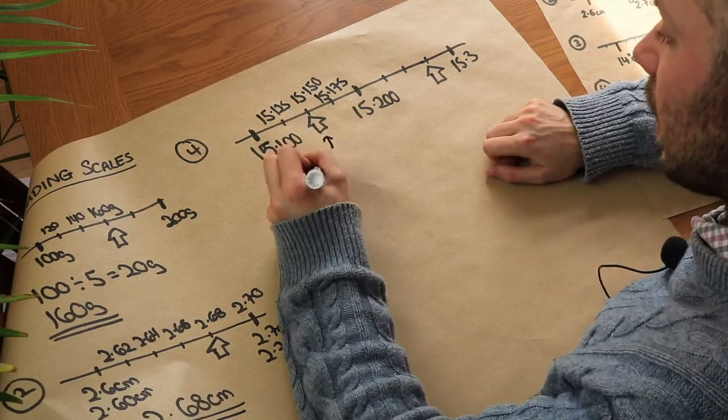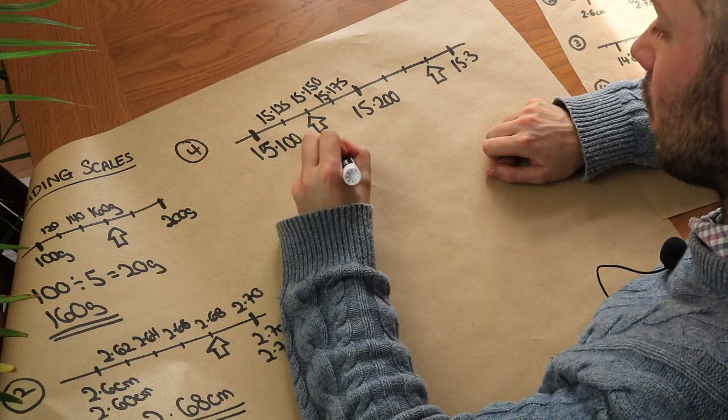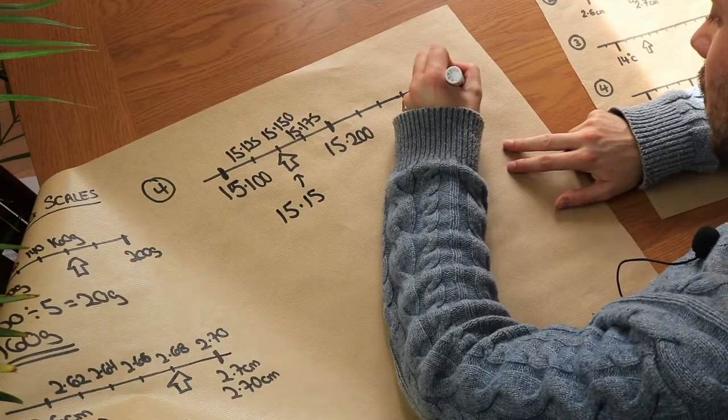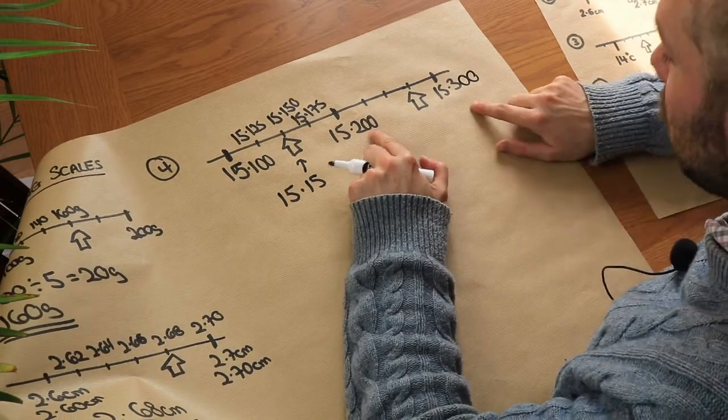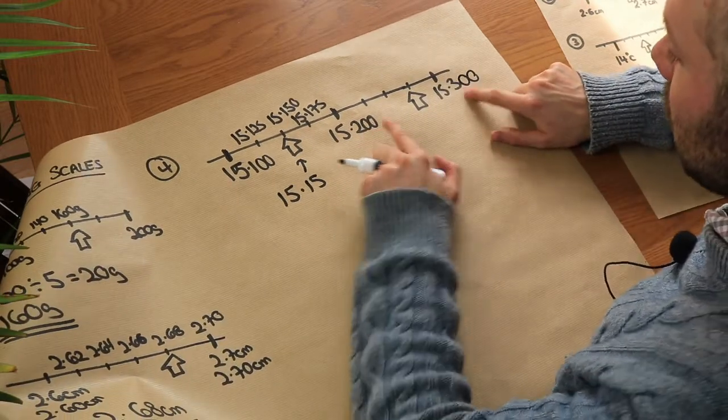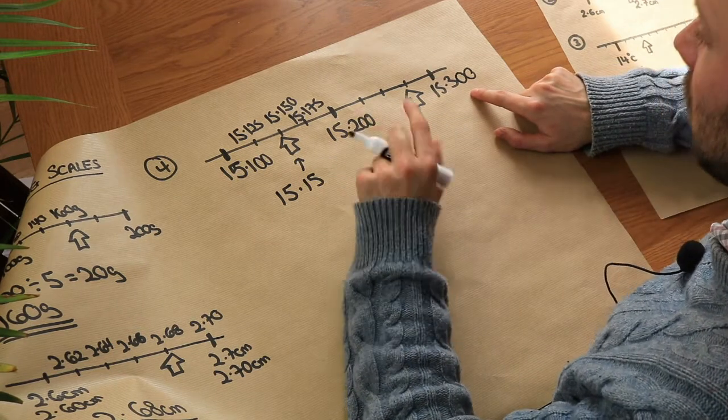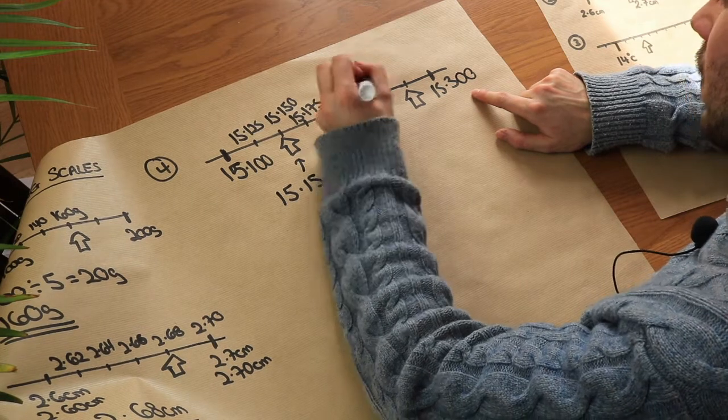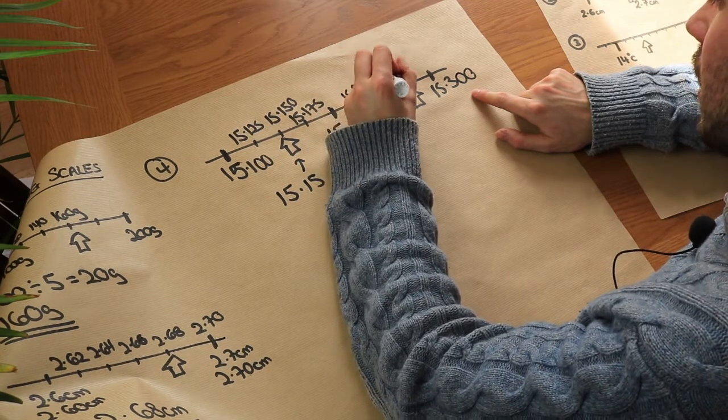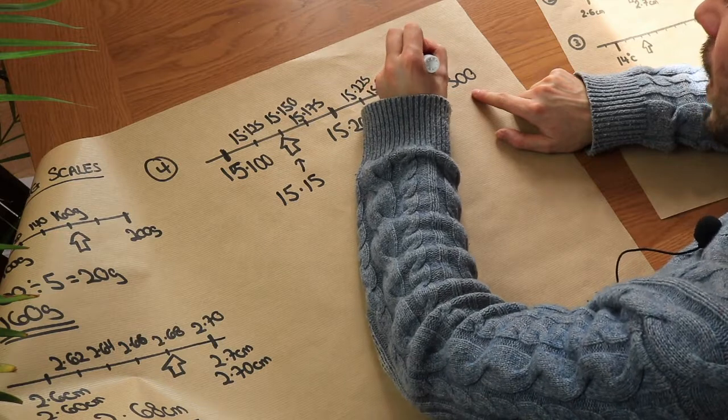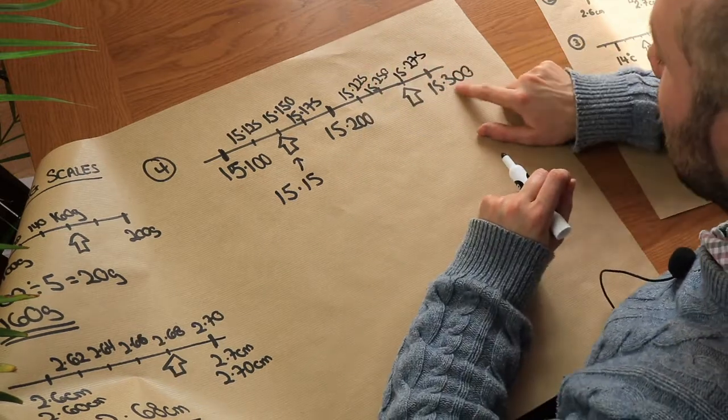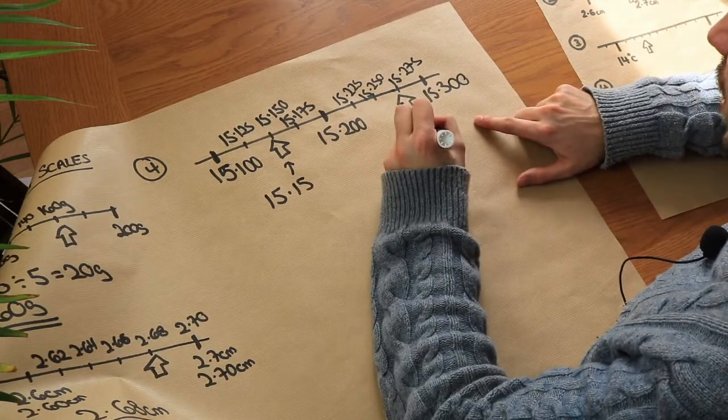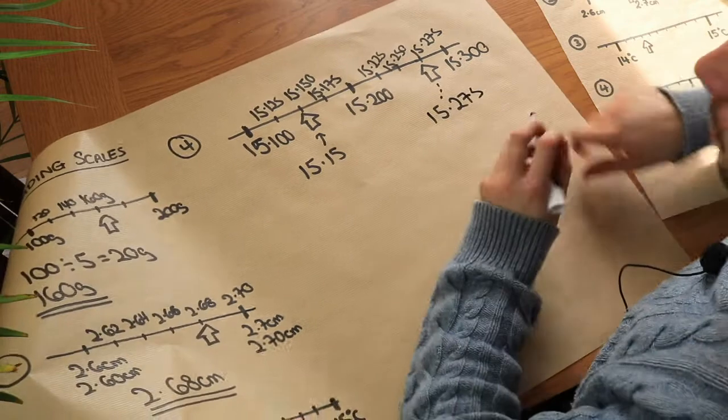So this value here is 15.15. We don't need that zero on the end. And what about here? If we put two zeros on the end again, now we've got 200 here, 300 here. That's the difference of 100 divided up into fours, 25 we're going up by each time. So it's 15.225, 15.250, and 15.275, add 25 again, and yes we get 300 again. So indeed that value there is 15.275.